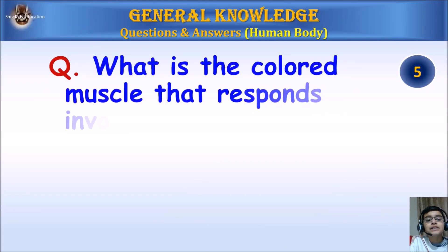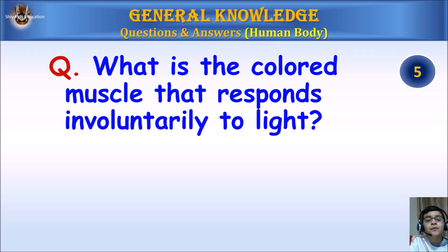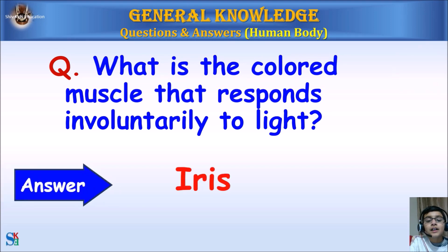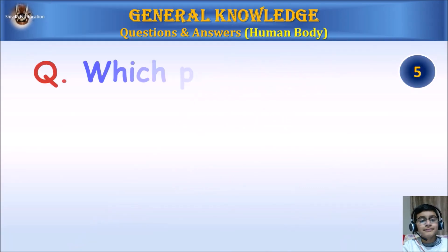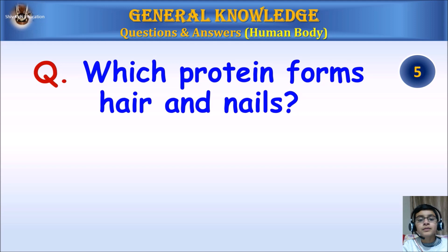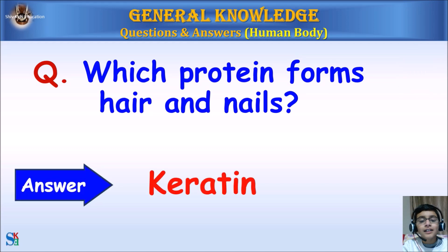What is the colored muscle that responds involuntarily to light? Answer: Iris. Which protein forms hair and nails? Answer: Keratin.